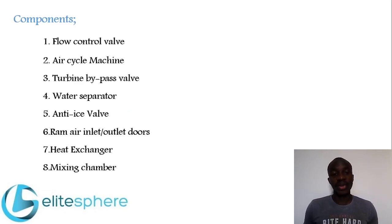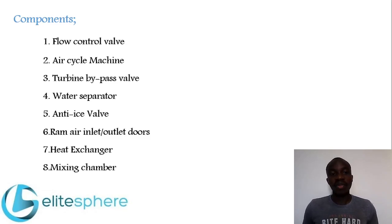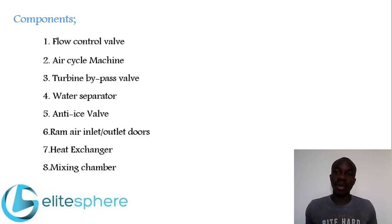The main components found in an air conditioning system that uses an air cycle cooling system. First, we have a flow control valve. A flow control valve controls the flow of bleed air from the engine to the air conditioning pack and ensures a constant flow of bleed air to the pack. Its second function is that it acts as a shut-off valve — it can be used to switch the air conditioning pack on or off.